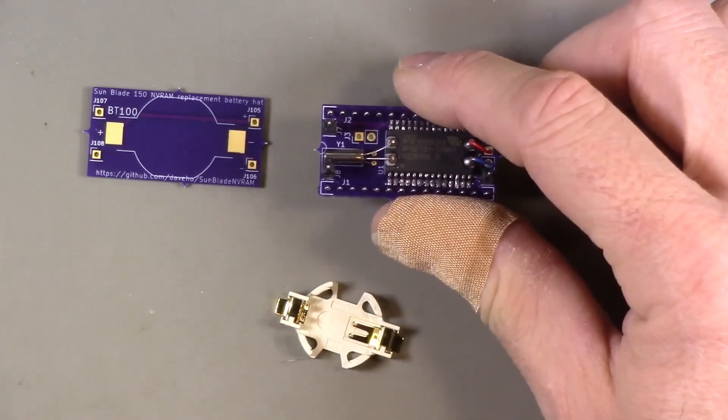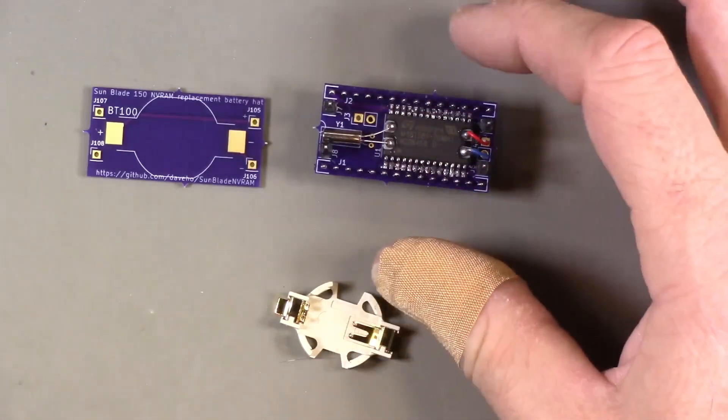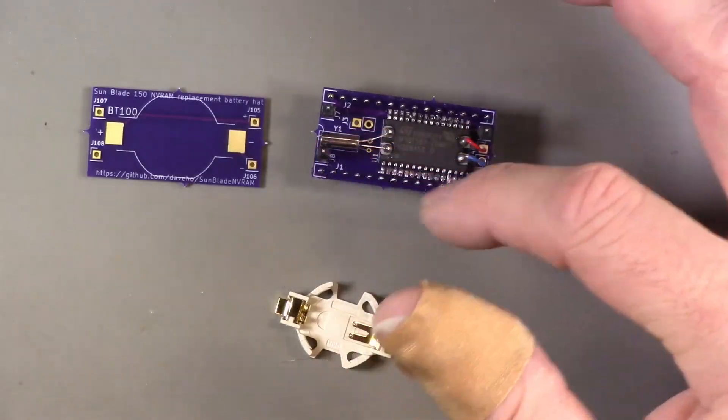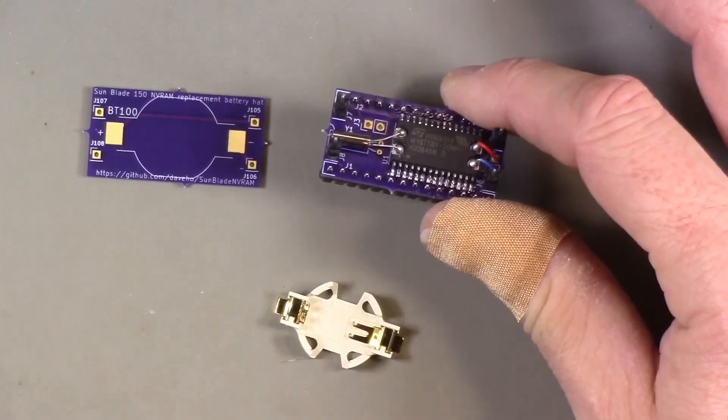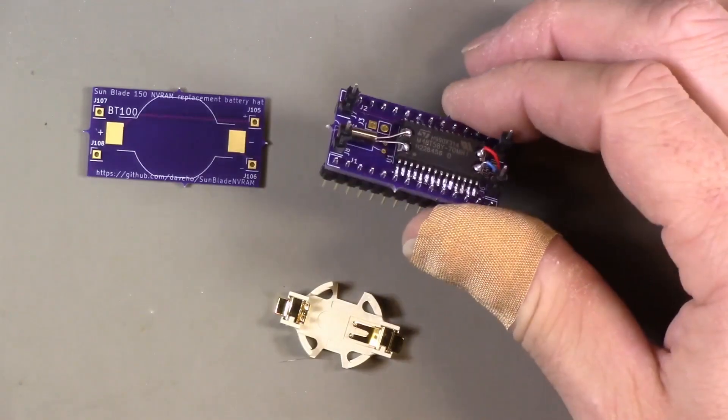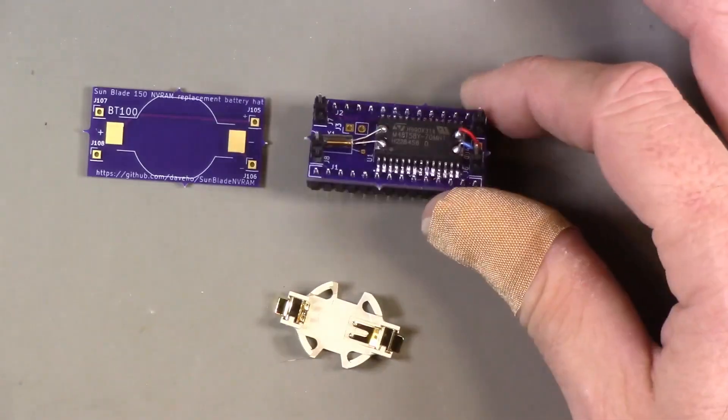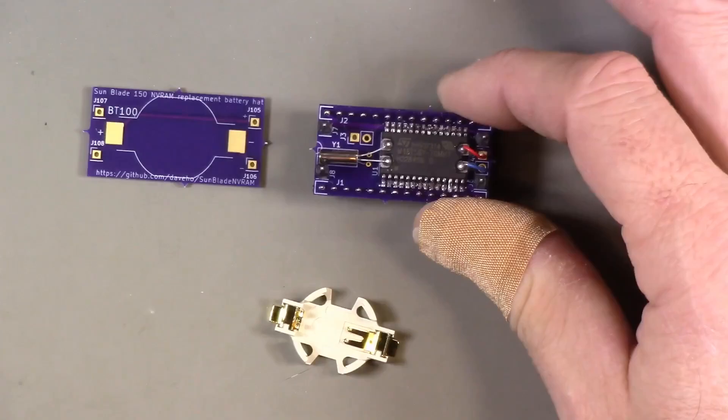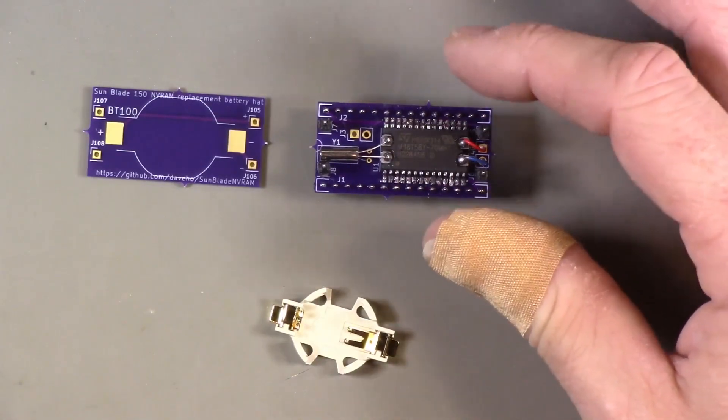Here is the main problem with this module design. This chip is wide enough that there is really not enough room to put it between the two rows of pin headers that you need in order to get this into a DIP28 form factor. What that means is that it is quite challenging to solder this chip onto the board because it just barely clears the pin headers. But what's worse is I had to actually shrink the footprint a little bit so that it would fit, meaning that there is very little exposed pad that you can actually solder to when you place the chip down.